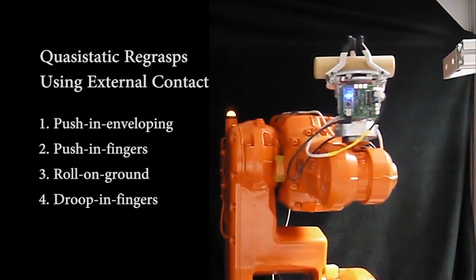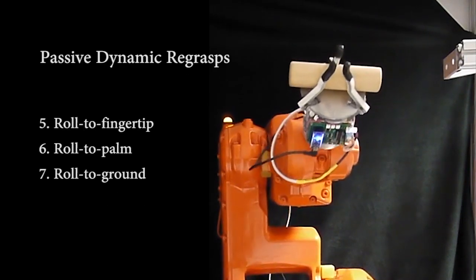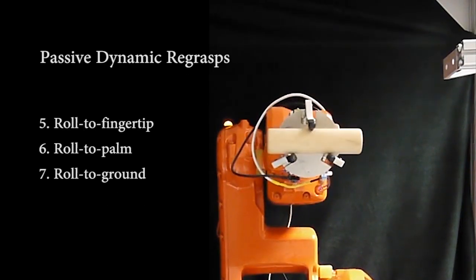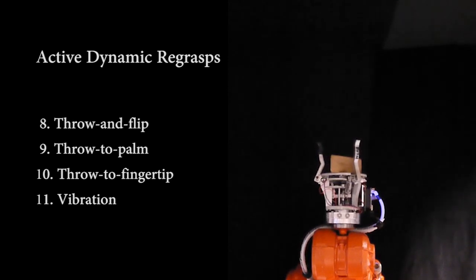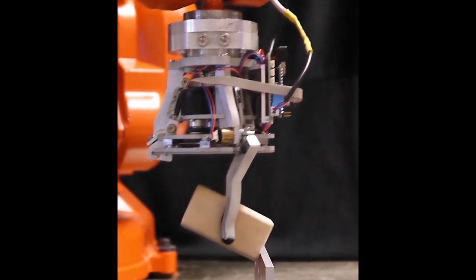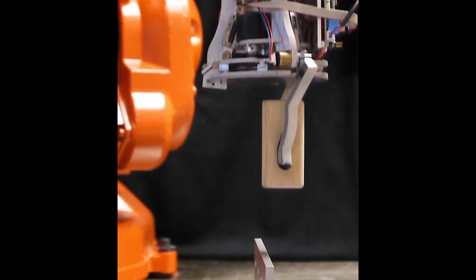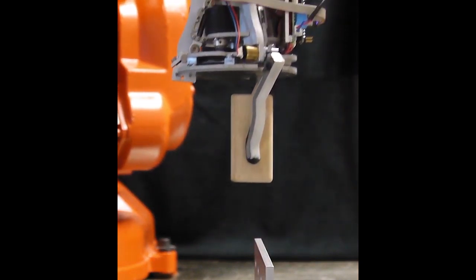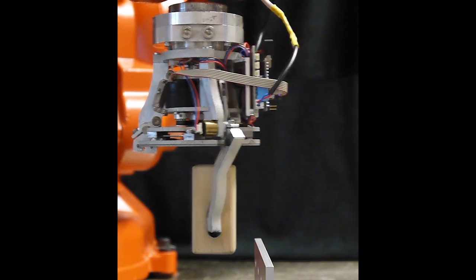To bring such dexterity to robot hands, we must look around the hand and look at the entire hand robot environment system. Gravity, inertia, arm motions, and external contacts from the environment can all be exploited to manipulate the object in the hand.